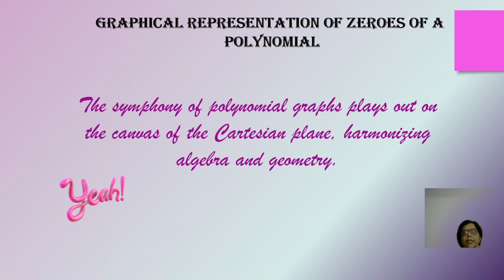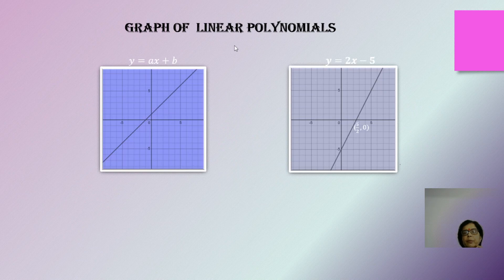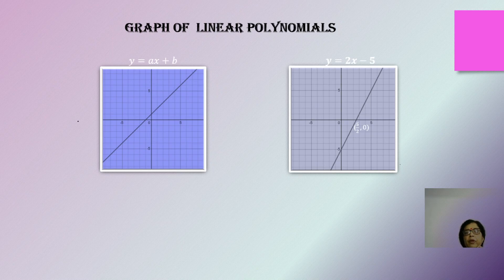What exactly do we understand by the graphical representation of the zeros of the polynomial? We'll take the illustrations one at a time. To initiate, we begin with linear polynomials. In the case of a linear polynomial, which has a standard form of f(x) = ax + b, the graph line will always be a straight line. It's a degree 1 polynomial, so the graph line is always a straight line.